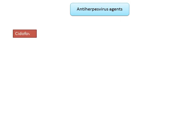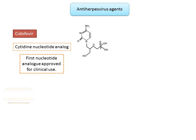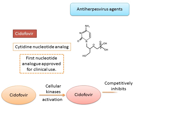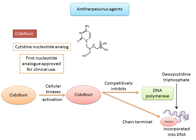The next anti-herpes agent is cidofovir. Chemically it is a cytidine nucleotide analog with inhibitory activity against human herpes, papilloma, polyoma, pox, and adenoviruses — the first nucleotide analog approved for clinical use. Once inside the cell, cidofovir is activated by cellular enzymes; after phosphorylation to its diphosphate form, it competitively inhibits the incorporation of deoxycytidine triphosphate into viral DNA by viral DNA polymerase, disrupting further chain elongation.